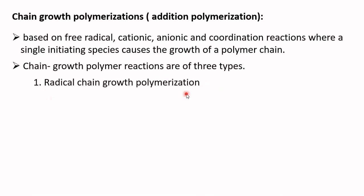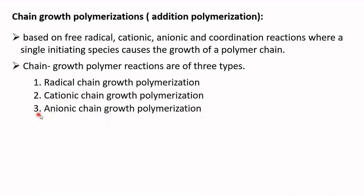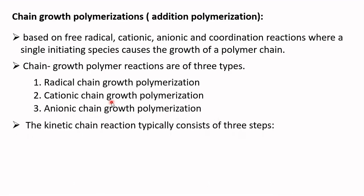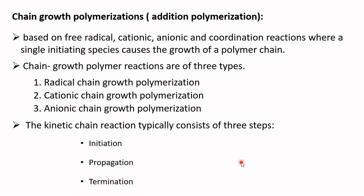Chain growth polymerization reactions are of three types: radical chain growth polymerization, cationic chain growth polymerization, and anionic chain growth polymerization. These three kinds of chain growth polymerization reactions typically consist of three steps: initiation, propagation, and termination.